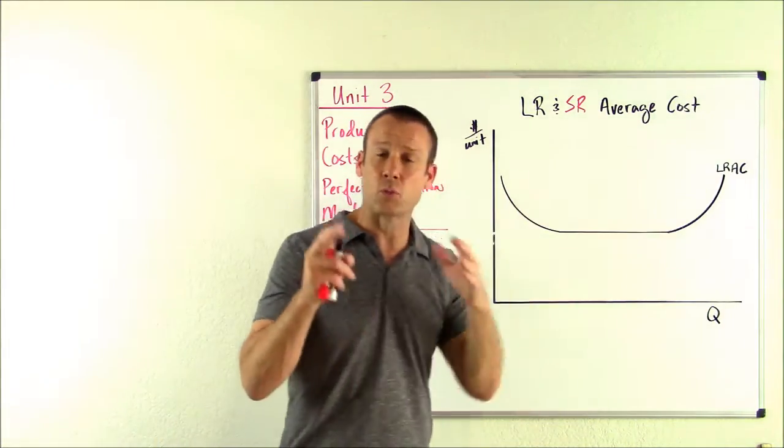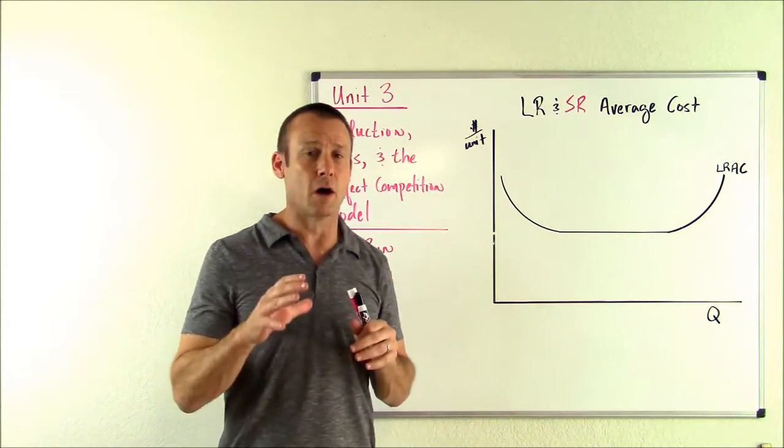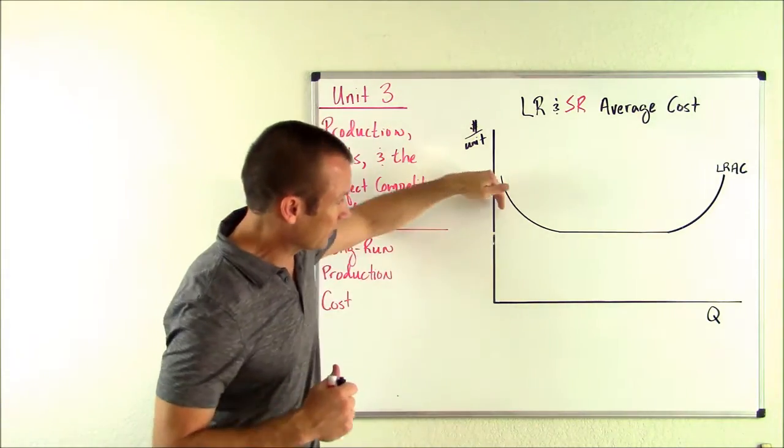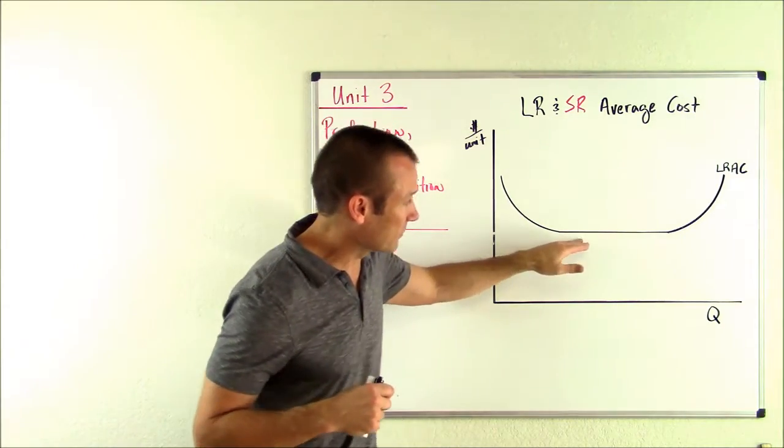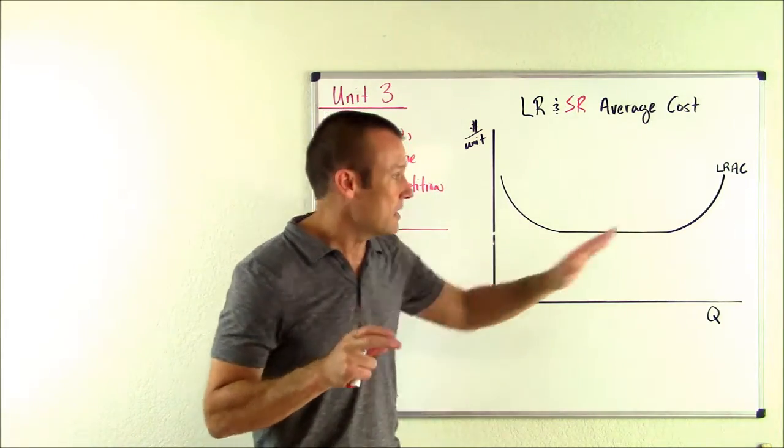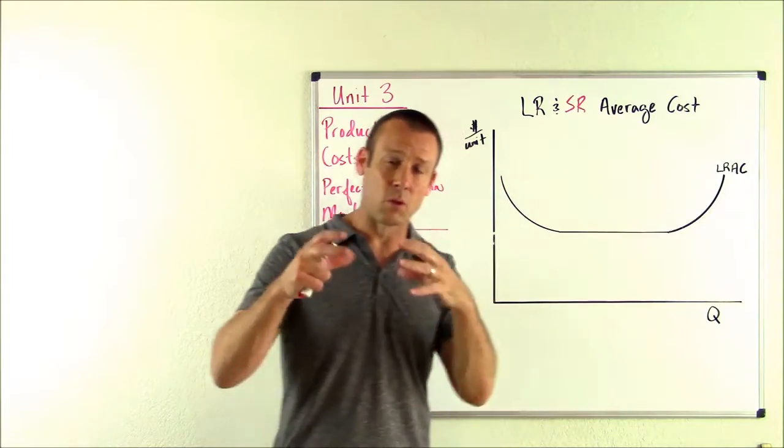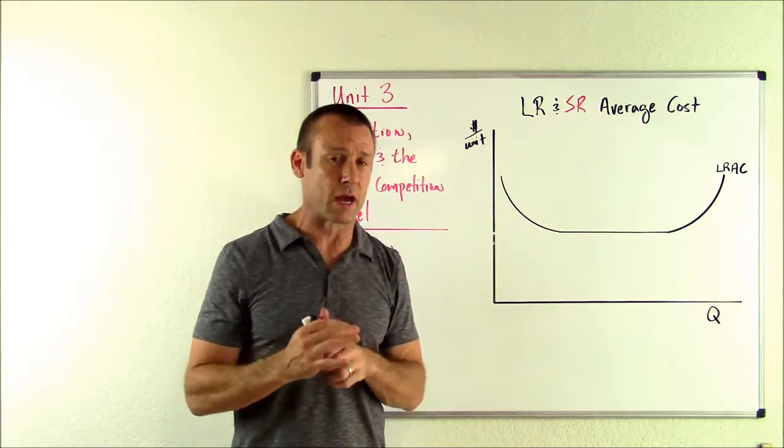And we get this type of shape, which we are used to. And what this is saying is during this point in time, we're having economies of scale. This is constant returns to scale. And this is diseconomies of scale. But I want to look at this a little bit closer.